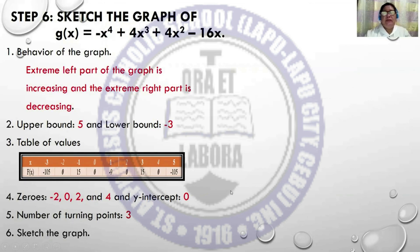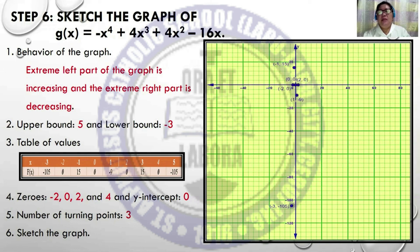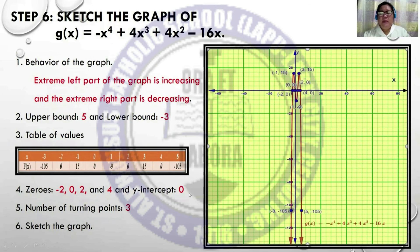Sketch the graph by plotting the points in the Cartesian plane: (-3, -105), (-2, 0), (-1, 15), (0, 0), (1, -9), (2, 0), (3, 15), (4, 0). Connect with a smooth curve and indicate the arrowheads. The lower bound point and upper bound point are marked. There are 3 turning points visible on the graph. There are 4 zeros where the graph crosses the x-axis.